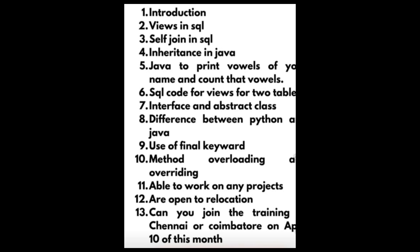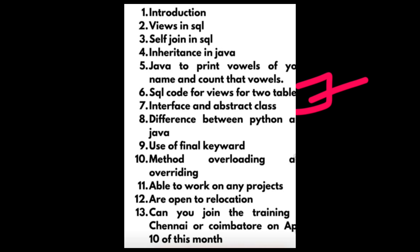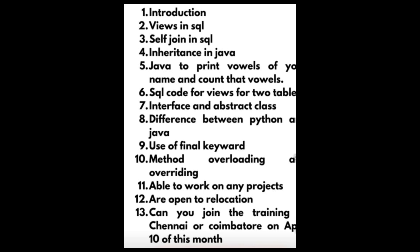For Java, prepare all OOPs-related questions with real-time examples. One coding question was: print the vowels of your name and count those vowels, taking your name as input. SQL code for views on two tables, interface vs abstract class, difference between Python and Java, use of the final keyword — and note that method overloading and method overriding are most commonly asked in Cognizant interviews. After the project explanation, they ask if you are willing to work on any project, if you are open to relocation, and if you can join training in Chennai or Coimbatore by a specific date — answer all of these with yes.